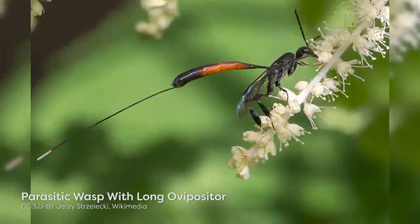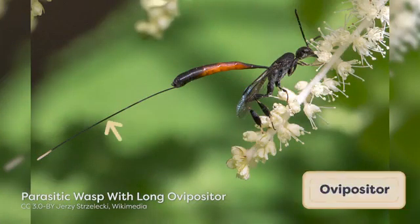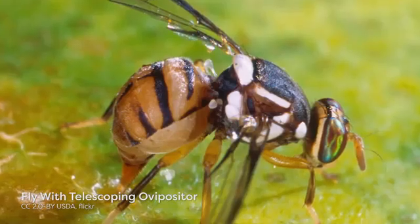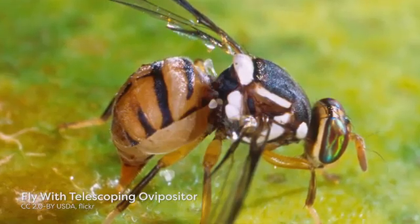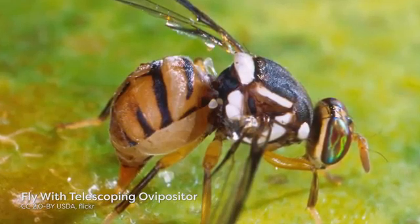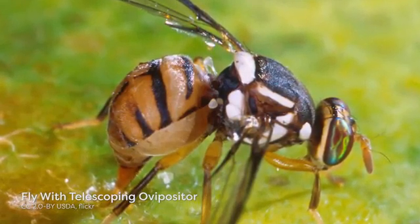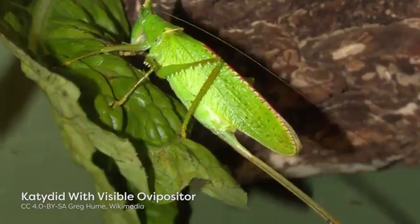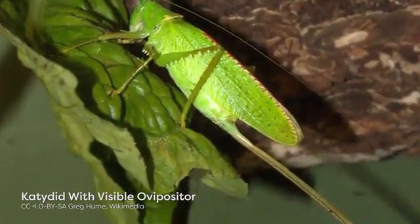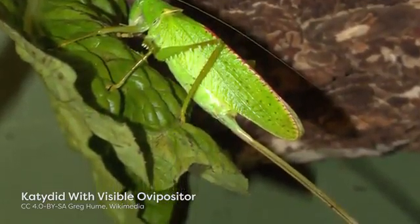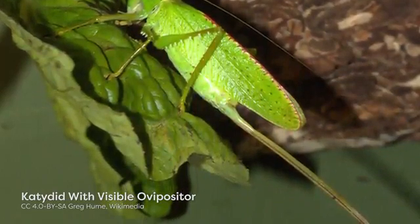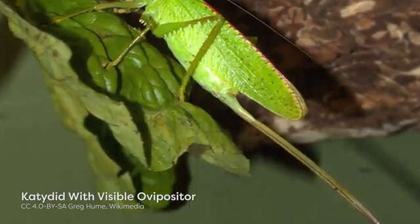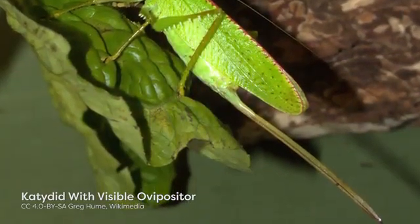Some female insects may have a visible ovipositor, a structure used to deposit eggs. Other females have telescoping ovipositors that can retract back into the body between egg-laying sessions. Ovipositors can have sensory structures that allow females to detect chemical, mechanical, or thermal cues to recognize optimal egg-laying sites.